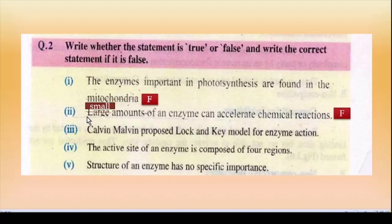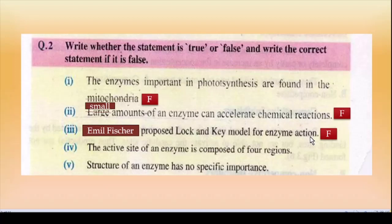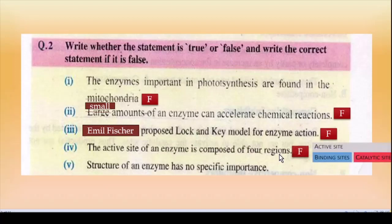Statement 3 — Calvin proposed a lock and key model for enzyme. Yeh bhi false hai. Calvin ki jagah hamare paas the Emil Fischer, jinhone lock and key model diya enzymes ke liye. Statement 4 — The active site of enzyme is composed of 4 regions. Yeh bhi false hai, kyunke active site ki do regions hain: binding site aur catalytic site.